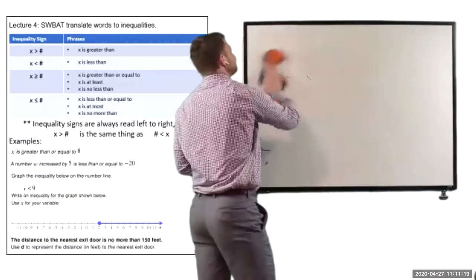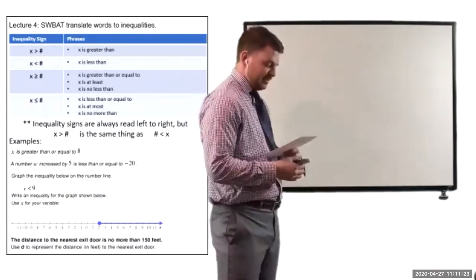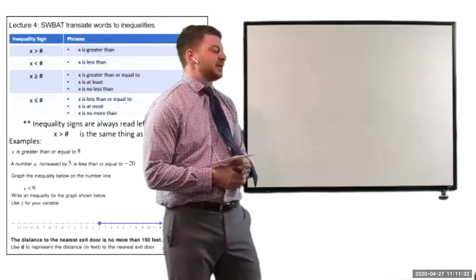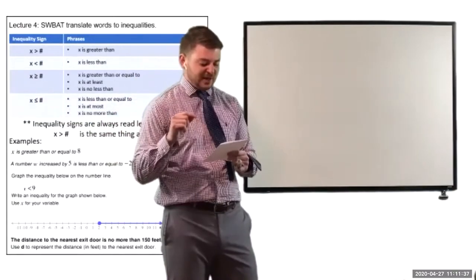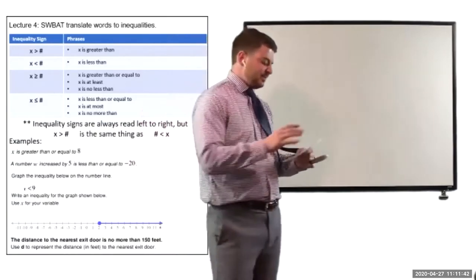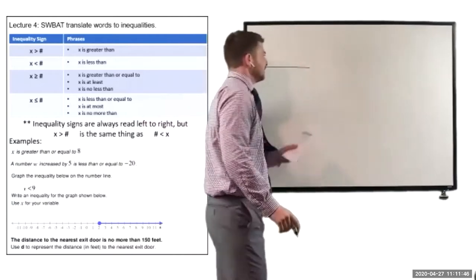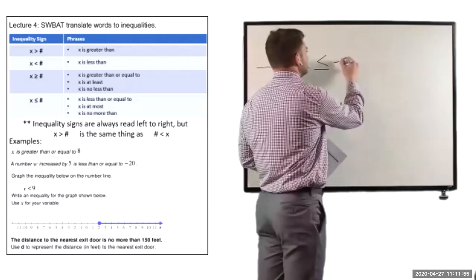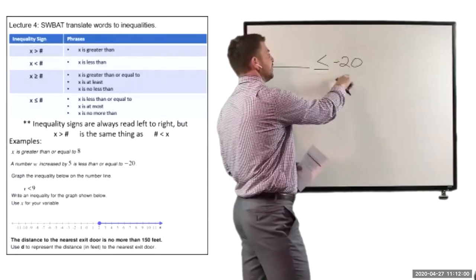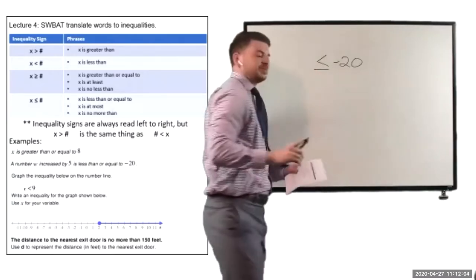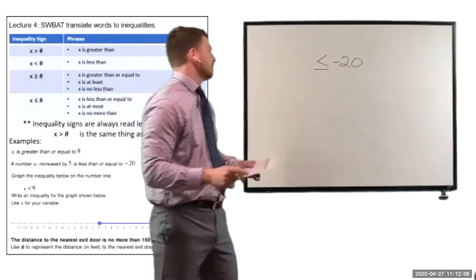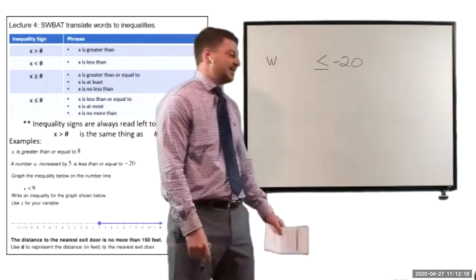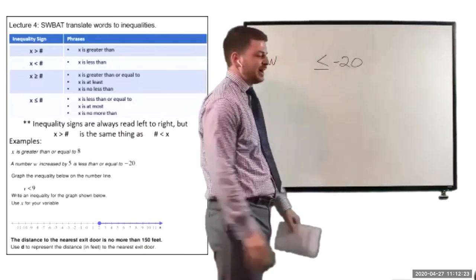Moving on to number two. Number two says: a number w increased by 5 is less than or equal to negative 20. For this one, let's start on the back side and work our way to the front, because 'a number w increased by 5' is a little tricky. We know it's less than or equal to negative 20, so we have that sign and negative 20. Now, how do we represent increasing a number by 5 in an equation? Write that in the chat.